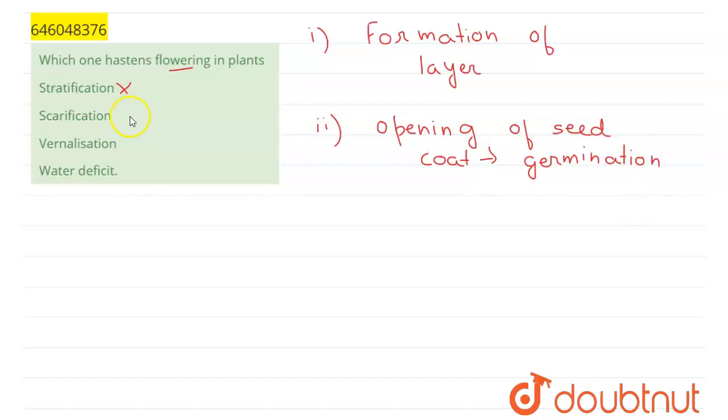The third option given is vernalization, and this is a process in which the seeds are exposed to long or cold climate. So as the seeds are kept in very cold climate, it induces dormancy in seed and then flowering is obtained.